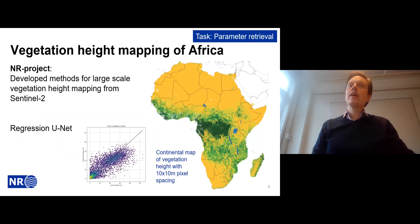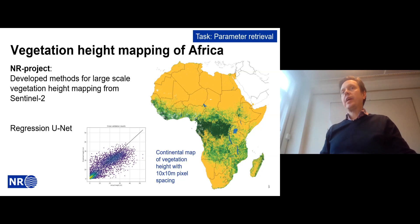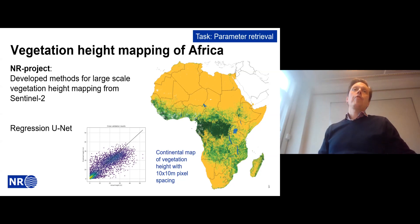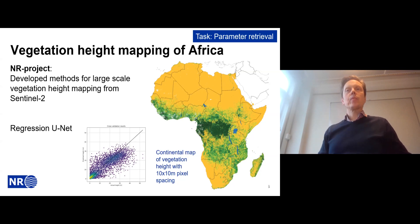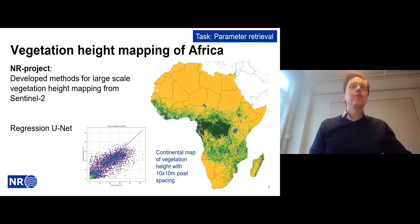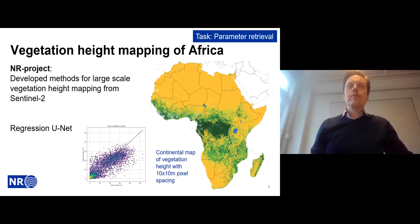We have also used this U-Net approach for vegetation height mapping. This is a regression task — estimating average vegetation height per pixel. The methodology was U-Net based in a regression fashion, and we ended up mapping vegetation height for the entire African continent — approximately 300 billion pixels. We spent a Christmas holiday running this computation. The challenge was that we only had training data from a few regions in Tanzania, so many steps were required, but the overall results made sense.